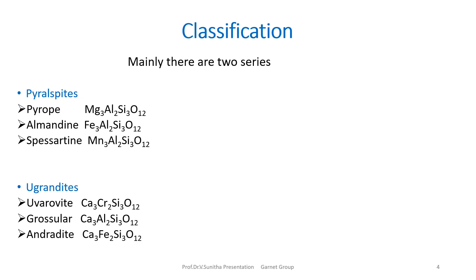Coming to the classification, there are two series: Pyralspites and Ugrandites. Pyralspites contain three minerals: Pyrope, Almandine, and Spessartine. Pyrope is a magnesium aluminum garnet represented as Mg3Al2Si3O12. Almandine is an iron aluminum garnet, Fe3Al2Si3O12. Spessartine is a manganese aluminum garnet, Mn3Al2Si3O12. The Ugrandites include Uvarovite, Grossular, and Andradite. Uvarovite contains calcium and chromium: Ca3Cr2Si3O12.